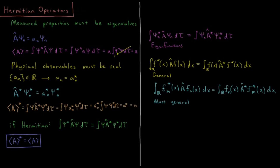In this video, we'll discuss Hermitian operators and the caveat that all operators in quantum mechanics must be Hermitian. So we'll start with the fact that measured properties must be eigenvalues, which we know from postulate 3, I believe.